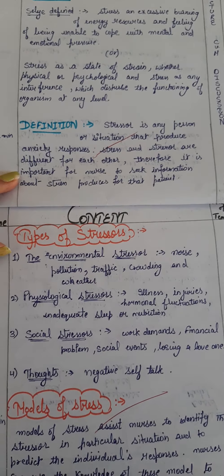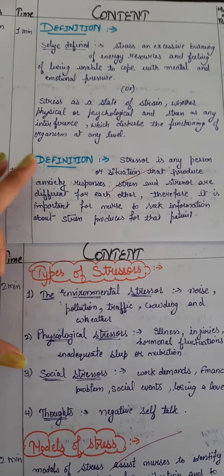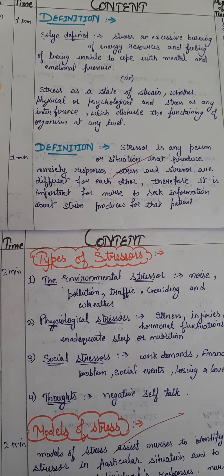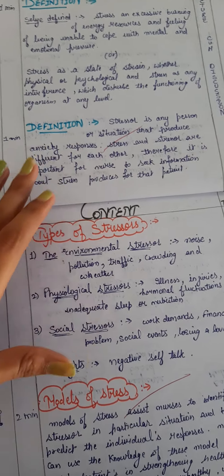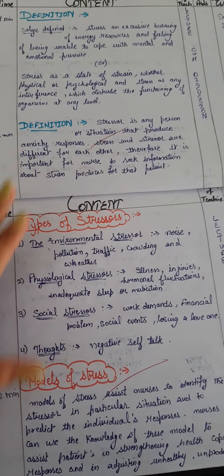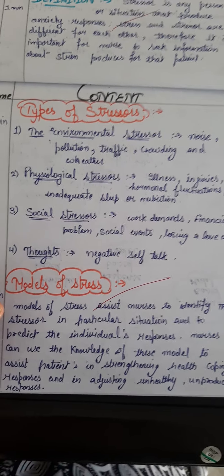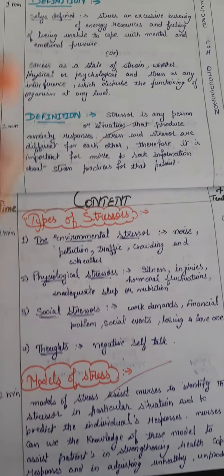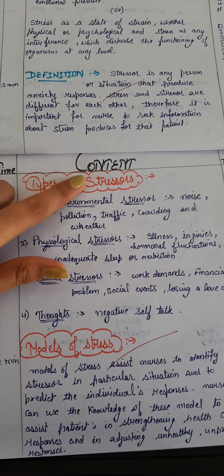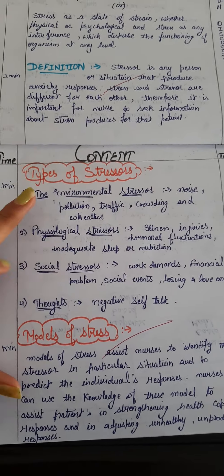There are several types of stressors which can produce stress in our body. To summarize the definitions: stress is a burning of energy, it leads to physical and psychological alteration in organ functioning, and it leads to the production of anxiety. Stressors are those which produce anxiety, and by which our body reacts and produces stress. Stressors are mainly of four types.